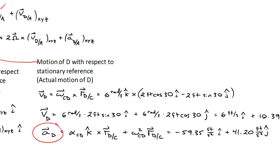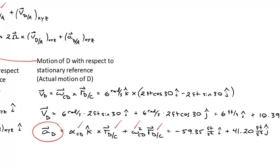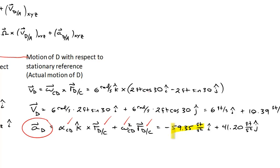I can do the exact same thing for the acceleration of point D. The acceleration of CD is provided, we now know the position of D relative to C, and we know the angular velocity. Working through the math, I come up with a value of almost 60 feet per second squared in the i-hat direction and a little over 40 feet per second squared in the j-hat direction for the acceleration of point D.